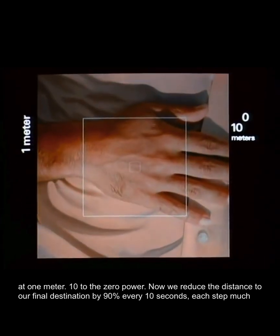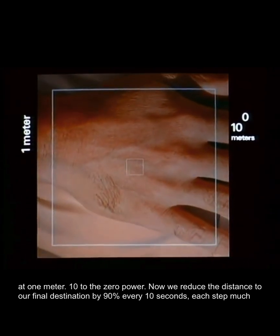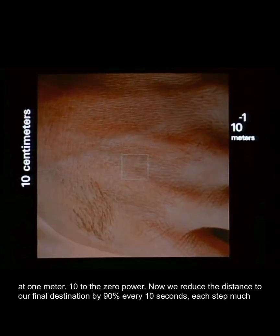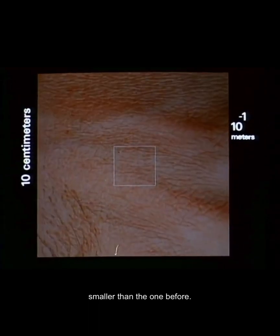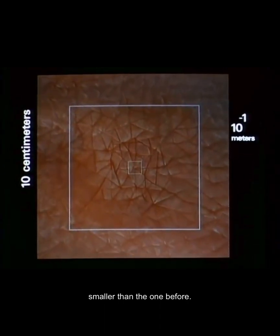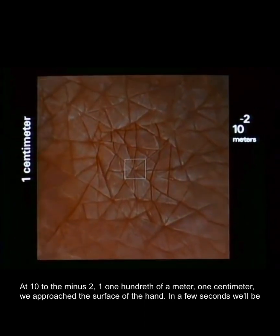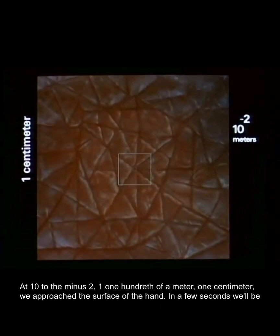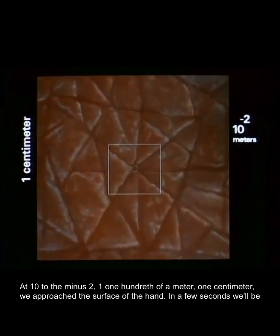Now we reduce the distance to our final destination by 90% every 10 seconds. Each step much smaller than the one before. At 10 to the minus 2, one one-hundredth of a meter, one centimeter, we approach the surface of the hand.